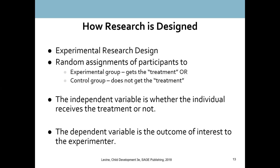You cannot do a true experiment if you start with pre-existing groups. For instance, if I do a study comparing teaching methods and I use an MCC class versus a University of Rochester class, that is not a true experiment — people did not have an equal chance of being in either condition. You always have to ask yourself: did each member in this experiment have an equal chance of being in either group? And that must be the case.